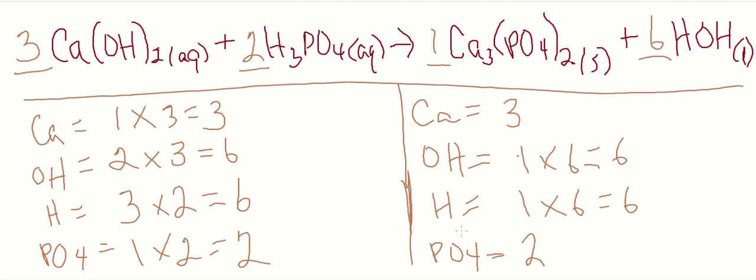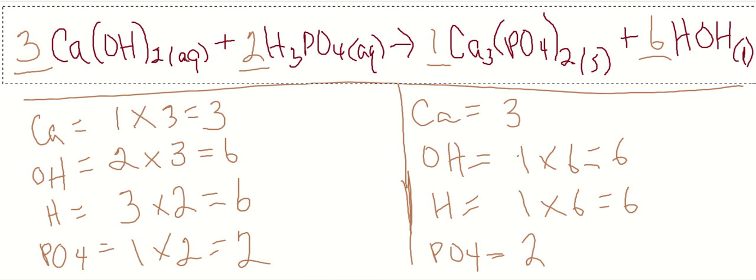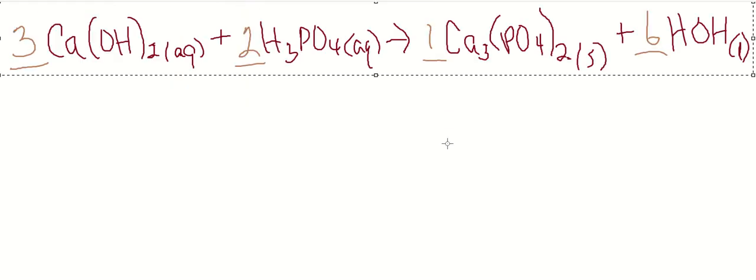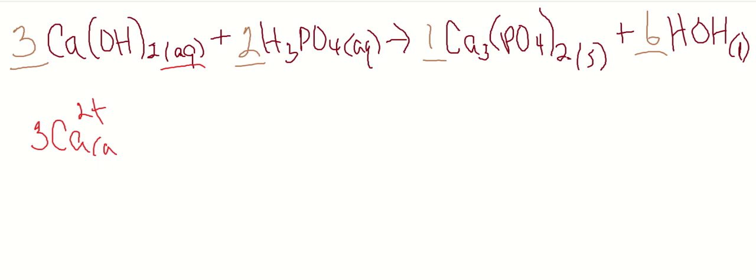Now everywhere we see aqueous, those ions are going to dissociate, so let's do that. I'm going to have to go back and forth a little bit here. Let me just copy this. Nice. That was easy, and so this is going to dissociate. So we have three calciums, two positive, aqueous plus three hydroxides in solution. Rather, sorry, there's going to be six of them. Three times the two, it's going to be six.